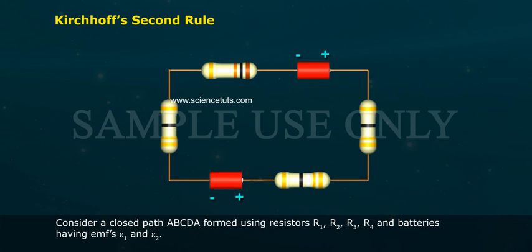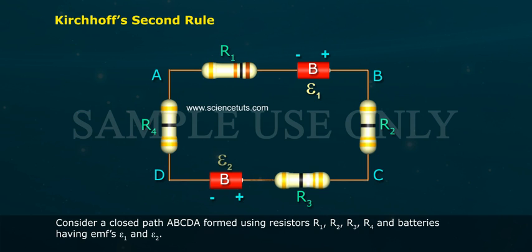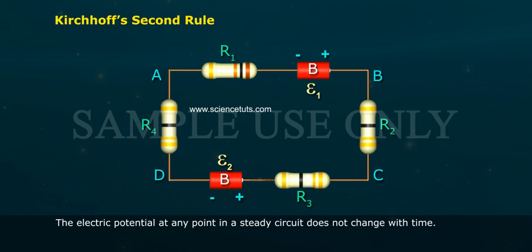Consider a closed path ABCDA formed using resistors R1, R2, R3, R4 and batteries having EMFs Epsilon 1 and Epsilon 2.